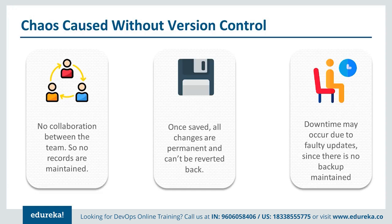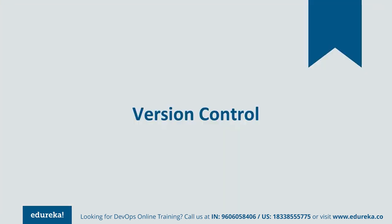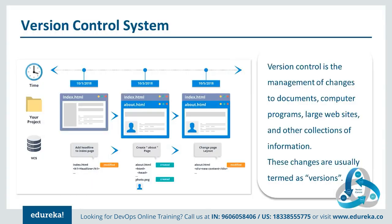Looking at these problems, many organizations decided to come up with the version control system. You can think of a version control system as a management system that manages the changes you make in your project. The changes might be adding files or modifying folders. What the version control system does is every time you make a change, it creates a snapshot of your entire project and saves it — these snapshots are known as versions. A snapshot is the entire state of your project at a particular time, containing what files are stored and what changes have been made.